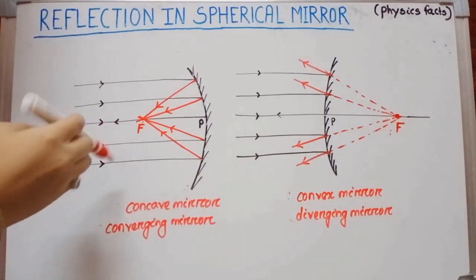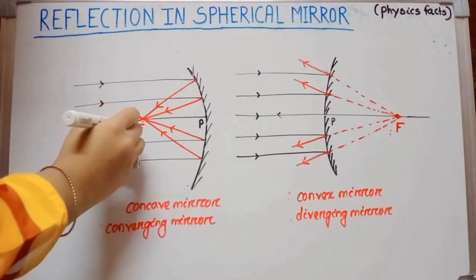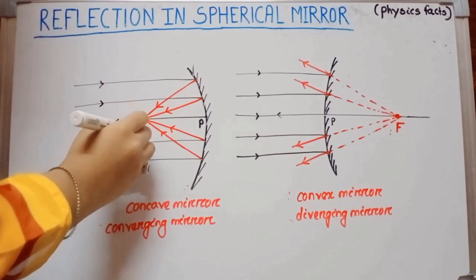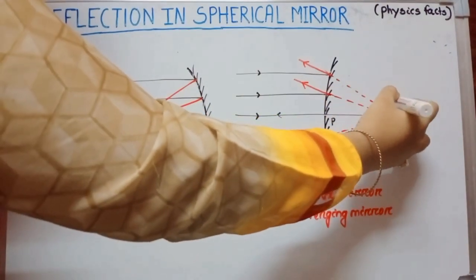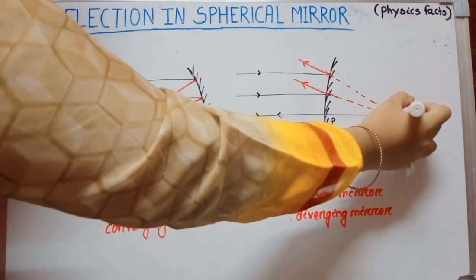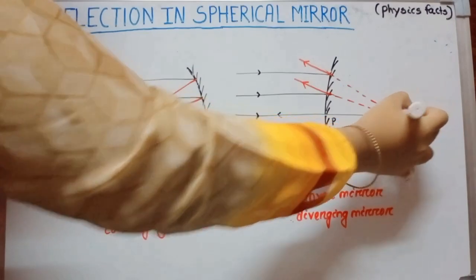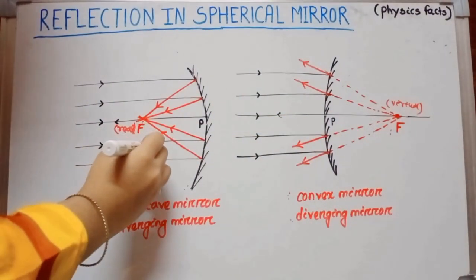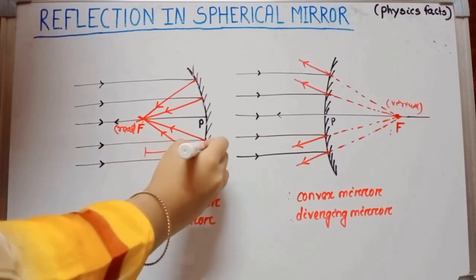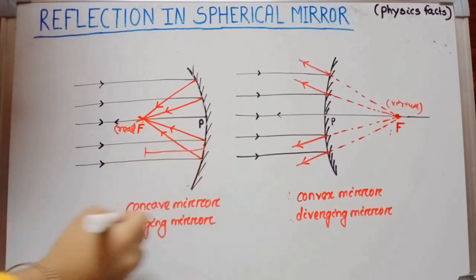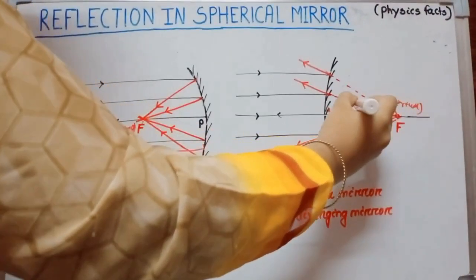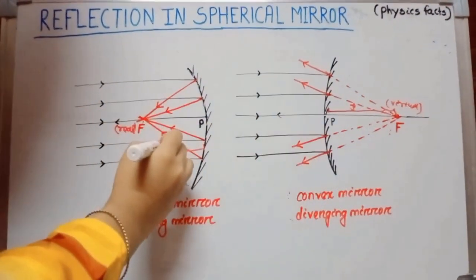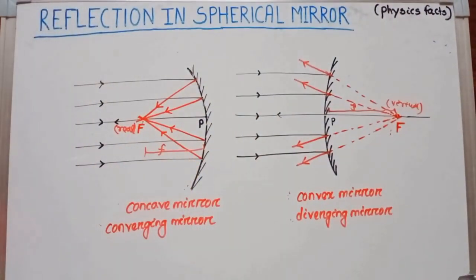In case of a concave mirror, the focus produced is a real focus, whereas in case of a convex mirror, the focus produced is a virtual focus. The distance between the focus and the pole is known as the focal length.